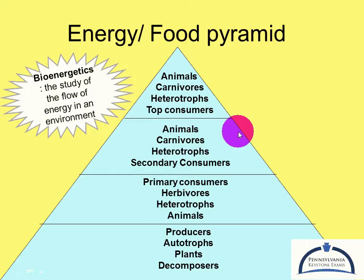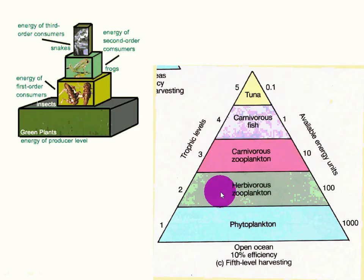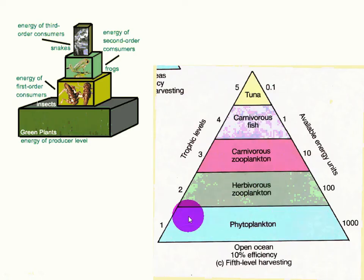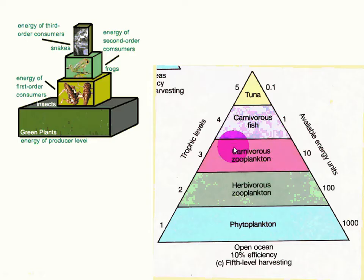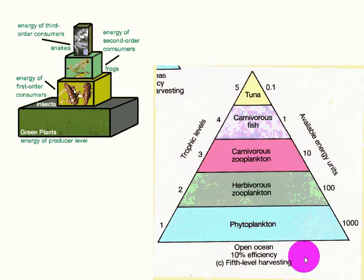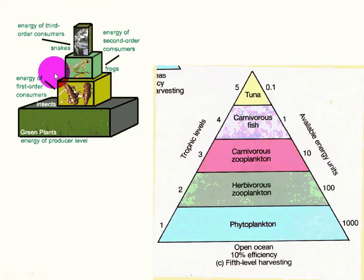This idea of studying the flow of energy is bioenergetics. Here's an example: phytoplankton or algae is the producer. Zooplankton eat the phytoplankton, then carnivorous zooplankton eat those zooplankton, then you get fish, and tuna will be your top consumer. This can work for an aquatic ecosystem, or it can work for a terrestrial ecosystem — those that are on land.